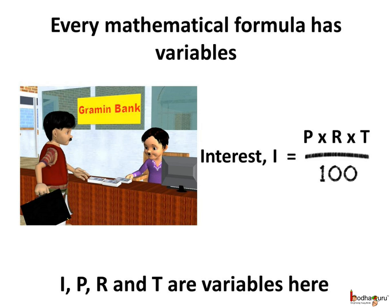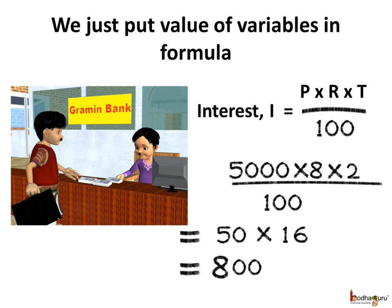Every algebraic expression has variables and every formula is an algebraic expression. For example, Mehnat Ram borrowed 5000 rupees at the interest rate of 8% per annum, and here we use the formula for calculating the interest: I is equal to PRT upon 100. This we use to find the interest that he would have to pay. Here I, P, R, T are the variables as their values may vary. This formula can be used to find the interest in all cases of simple interest, no matter what the principal, time, etc. are. So we just need to put the values of the variables in the formula.